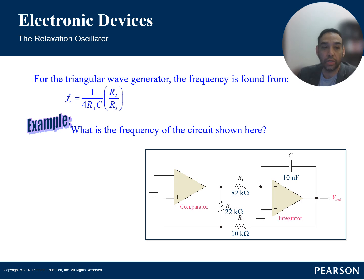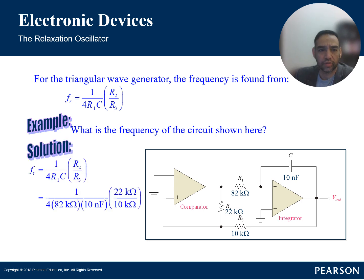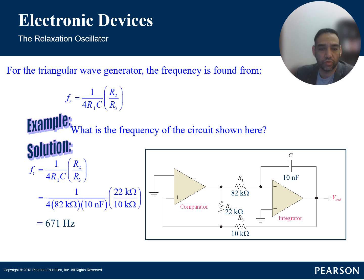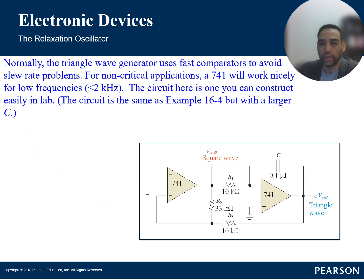For the triangular wave generator example, the frequency is found from: fr = 1 / (4 × R1 × C × (R2 / R3)). We extract R1, C, R2, and R3 from the circuit — which has a comparator at the front and an integrator at the back — then plug and chug. The result is a frequency of 671 Hz, meaning this triangle wave generator produces a triangle wave at 671 Hz.